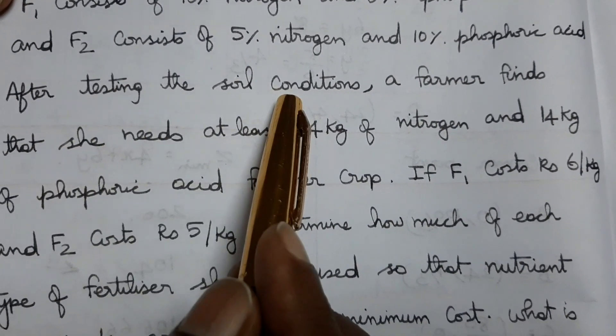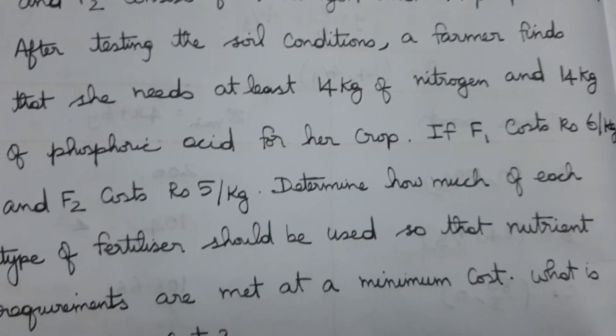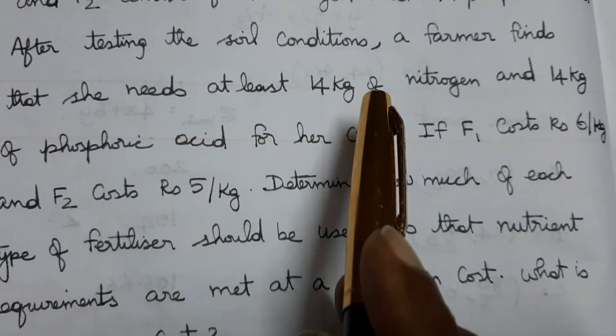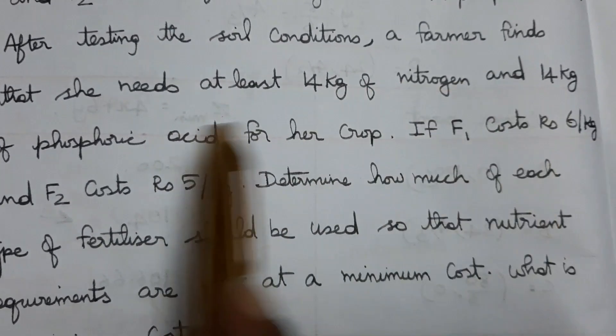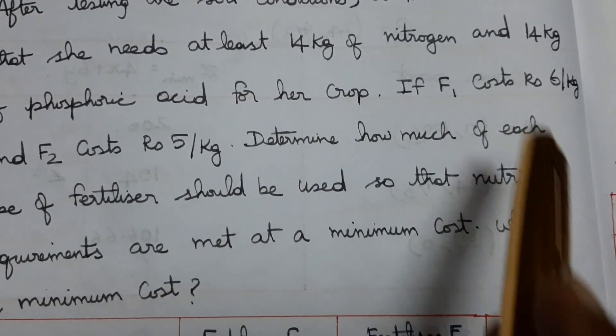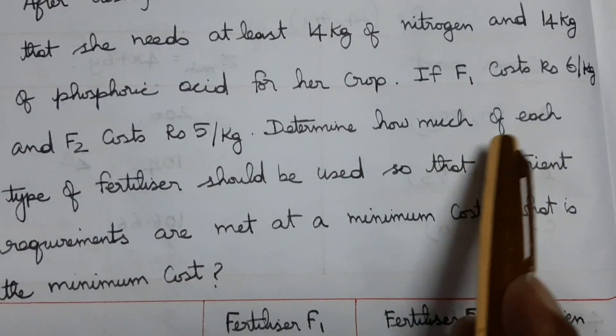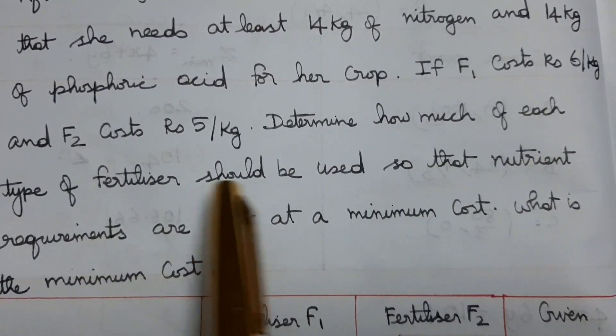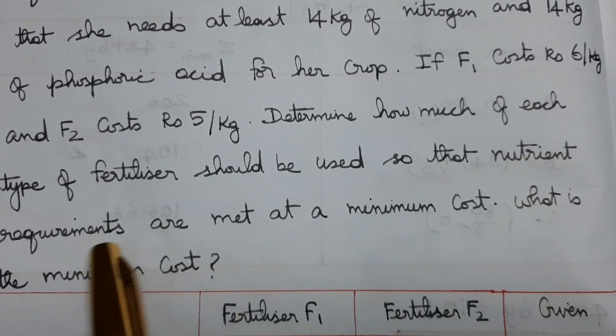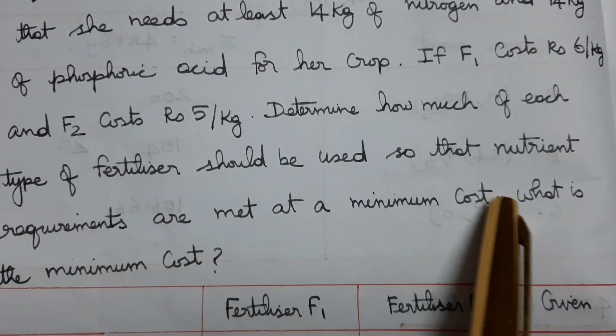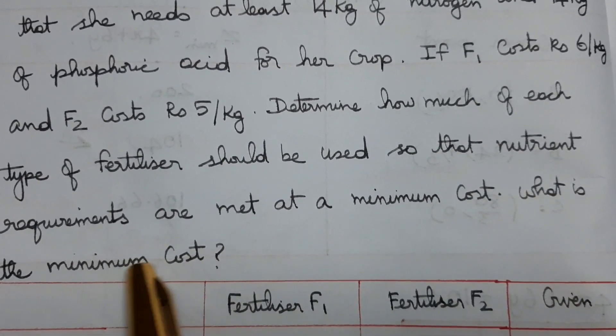After testing the soil conditions, a farmer finds that she needs at least 14 kg of nitrogen and 14 kg of phosphoric acid for her crop. If F1 costs 6 per kg and F2 costs 5 per kg, determine how much of each fertilizer should be used so that nutrient requirements are met at minimum cost. What is the minimum cost?